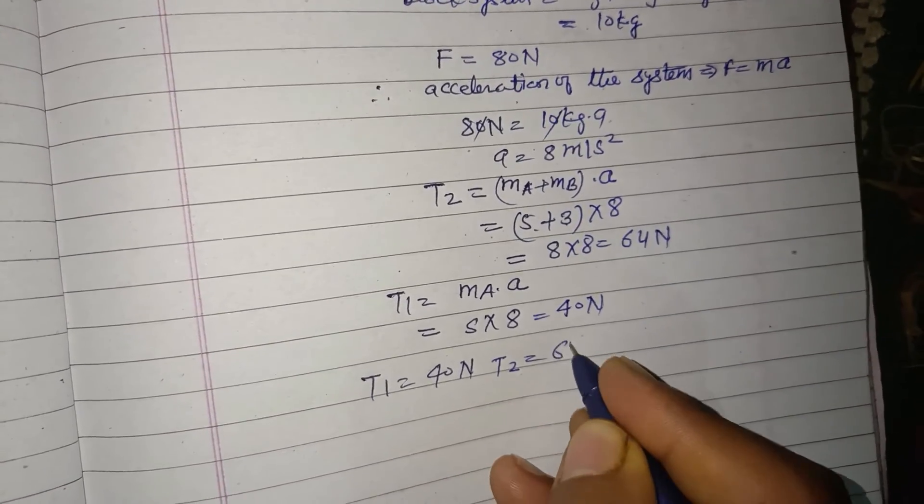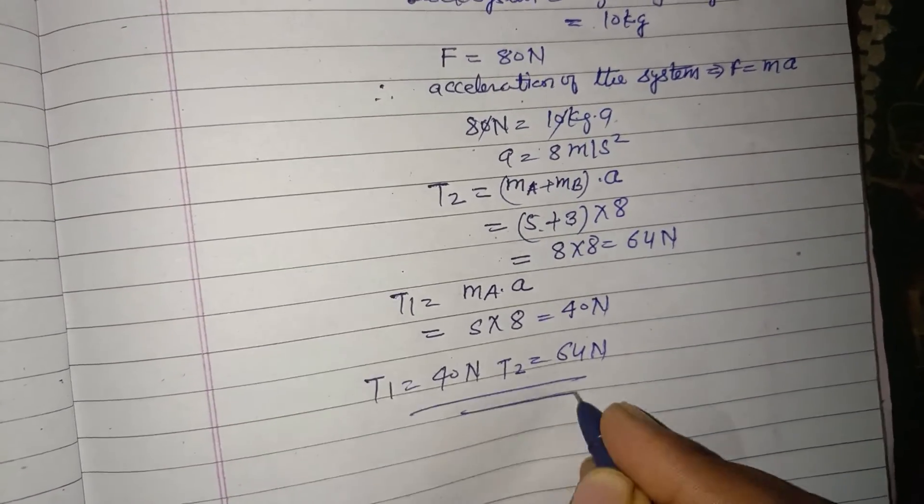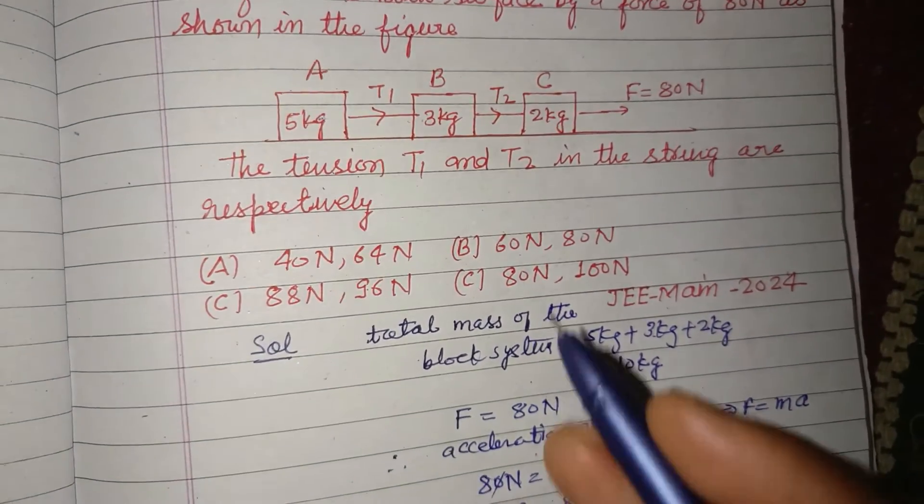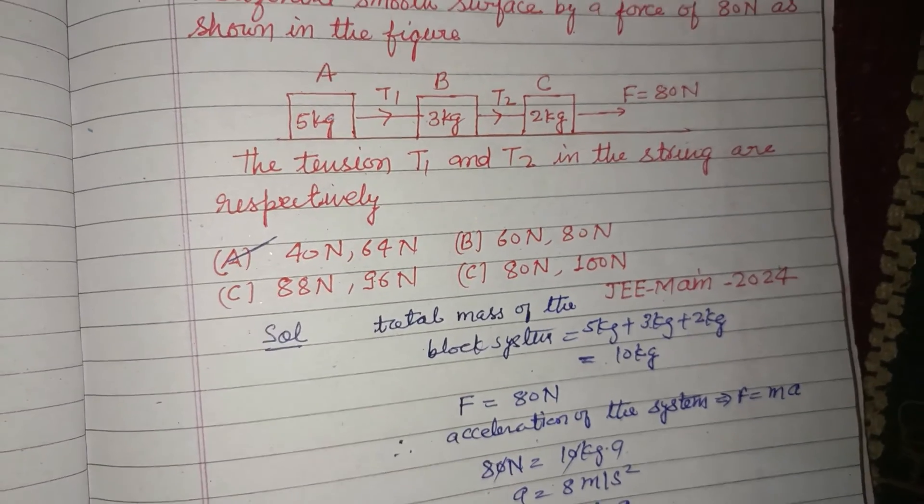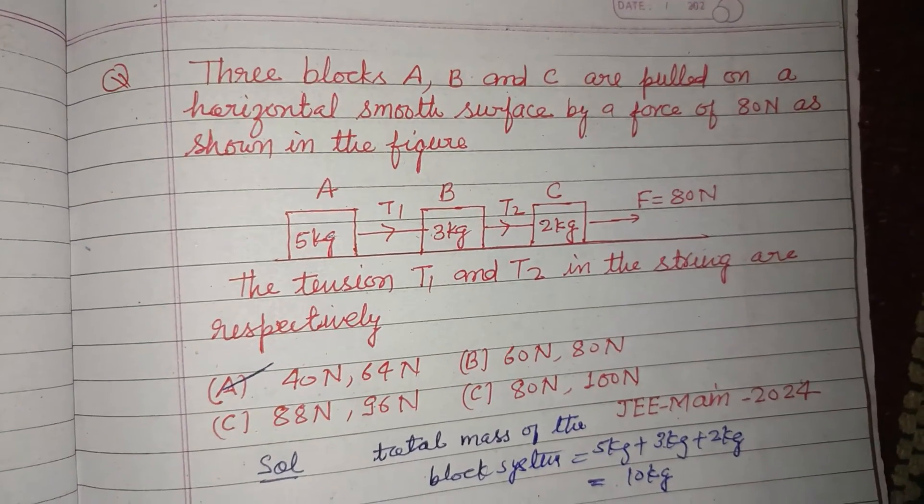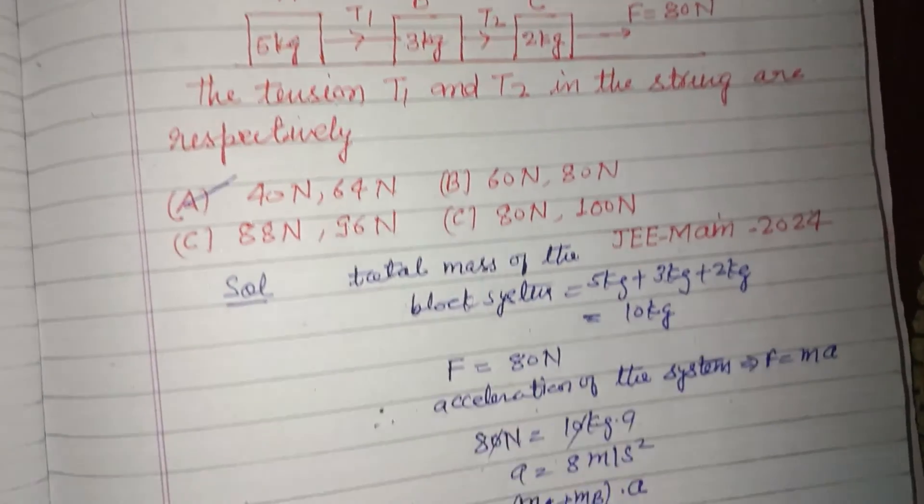T2 equals 64 Newton is the correct answer of this question, which is found in option A: 40 Newton and 64 Newton. This is option A, correct. I hope you got it. Please like the video, subscribe to the channel, thanks for watching.